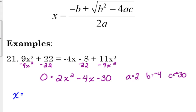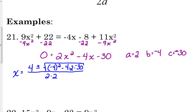x equals negative b. Change the sign. b is negative 4, so that becomes positive 4. Plus or minus the square root, make sure that negative 4 is in parentheses before you square it, minus 4 times a is 2 times c is negative 30, and that is all over 2 times a which is 2.